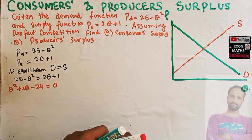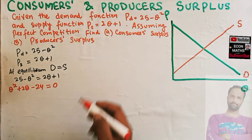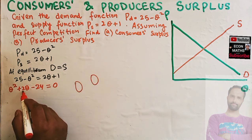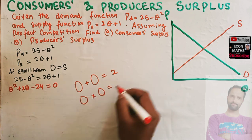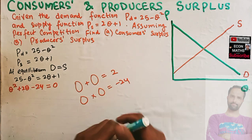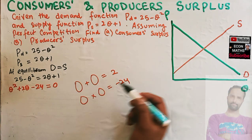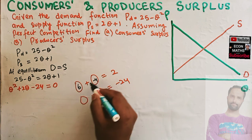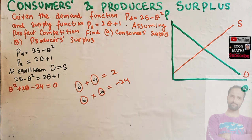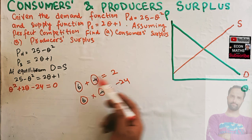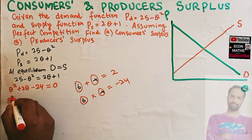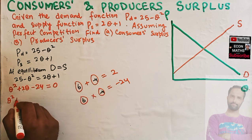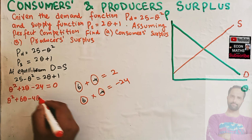This is a quadratic function, so we can use the middle term splitting method. We need two numbers whose sum equals 2 (the coefficient of the middle term) and whose product equals minus 24 (the constant term). So we get 6 and minus 4: six minus four equals two, and six times minus four equals minus 24. In place of 2q, we write 6q minus 4q.